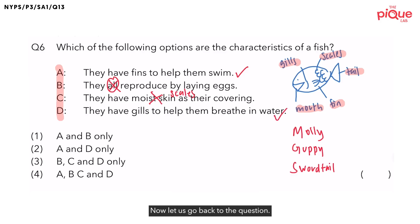Now, let us go back to the question. The question is asking you to select the characteristics of a fish. In other words, we have to select the ticks. Can you tell me which statement is correct? Statement A and D. Hence, the correct option is option number 2.